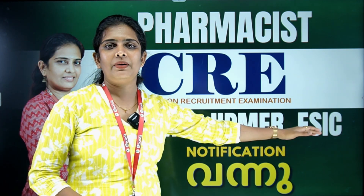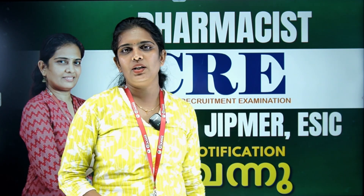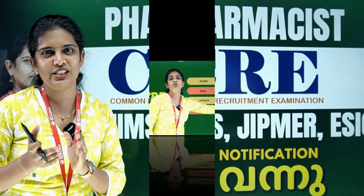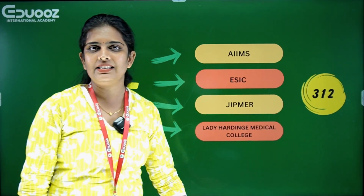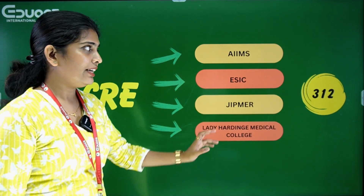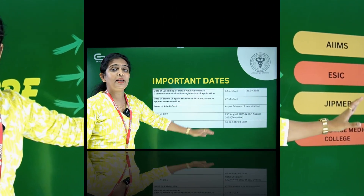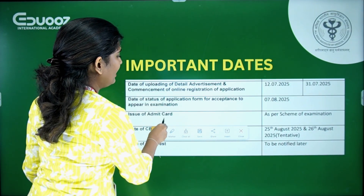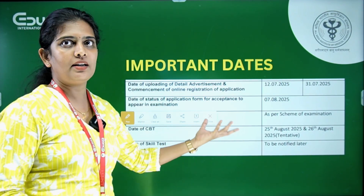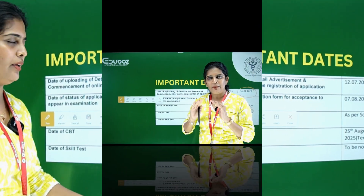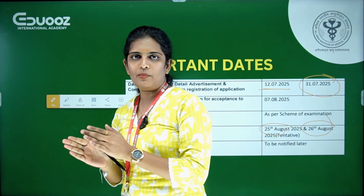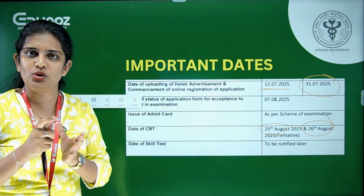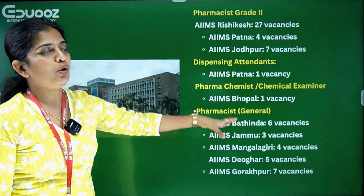There are three central government institutes with a Common Recruitment Examination (CRE) notification. There are 12 vacancies. There is a deadline to apply, an exam for professional knowledge, and a skill test.